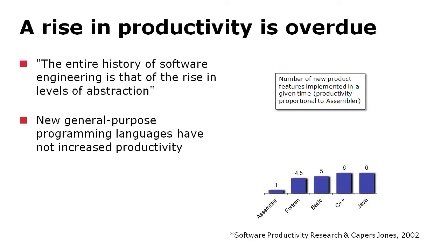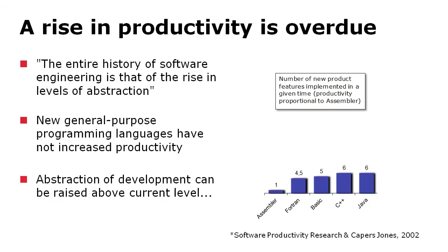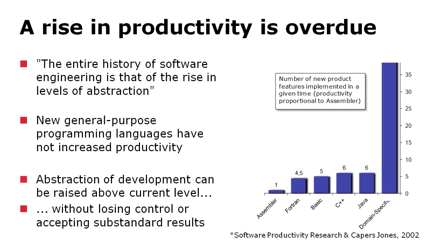Nobody is moving to C-sharp or Java today because of productivity increase. What domain-specific modeling is about is continuing to raise the level of abstraction from the current level by focusing on narrow application areas. When this is done, the productivity increase is fundamental.